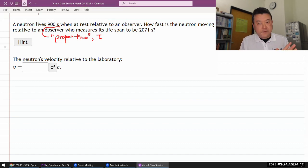I'm given proper time for some process. It asks, how fast is the neutron moving relative to an observer who measures its lifespan to be this amount of time? So just regular time T.